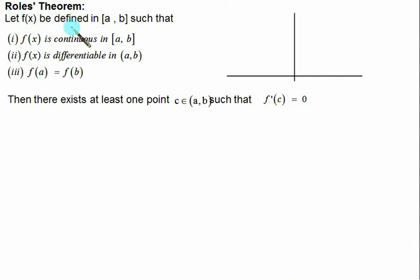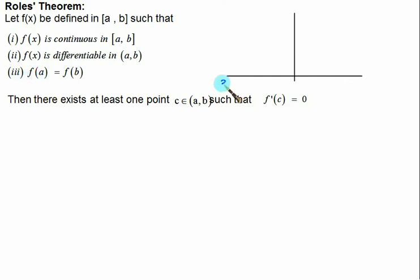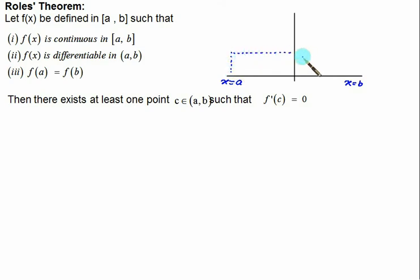We have Rolle's Theorem for derivatives. According to this, the function f(x) is defined in the closed interval [a, b] such that the function is continuous and differentiable, and the function values at the two endpoints must be the same. Continuity means left-hand limit equals right-hand limit equals the value at that point. Consider an x-y system with x = a and x = b; the y values at both endpoints must be identical.